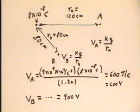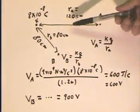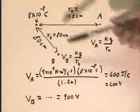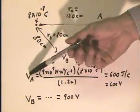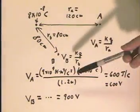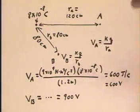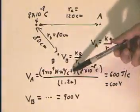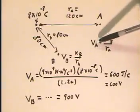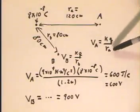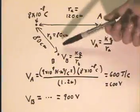Point A is 120 centimeters as we said from this charge. This means that the voltage at A, or the potential at A, is going to be KQ over R. Here's K, here's Q, here's R. The potential at A is KQ over RA. Actually let's use RA for the distance here so we can distinguish it from RB.